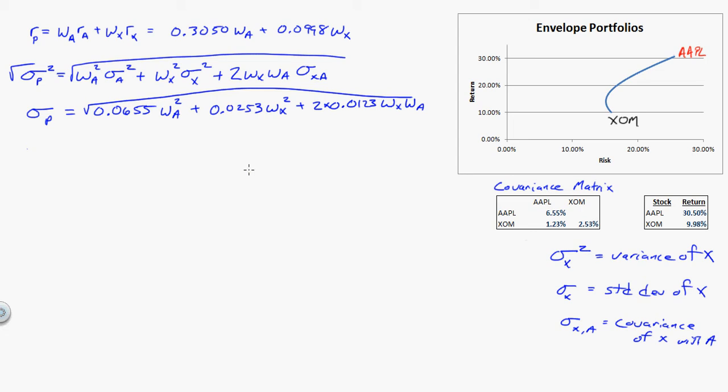So all I want to do with this is just pick points and say here's the weight of Apple, here's the weight of Exxon. We just pick points. Like if I'm 100% Apple, I'm 0% Exxon, because the amount I put in Apple plus the amount I put in Exxon is equal to 100% of my portfolio.